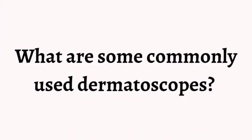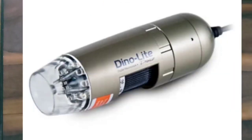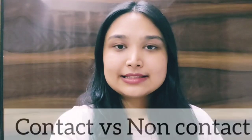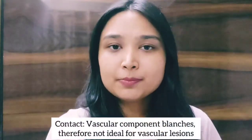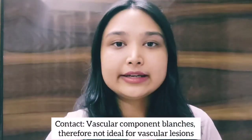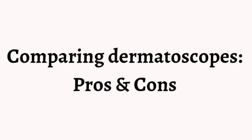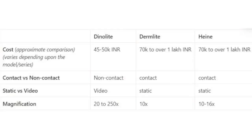There are two types of dermoscopes available in the market: contact dermoscopes like Derm Light and Heinz, and non-contact dermoscopes like Dino Light. Contact dermoscopy means the lens of the dermoscope will come in contact with the lesion during the examination. The disadvantage of contact dermoscopy is that since the lens puts pressure on the lesion, the vascular component of the lesion blanches. This problem does not arise in non-contact dermoscopes like Dino Light, where the lens does not touch the lesion.